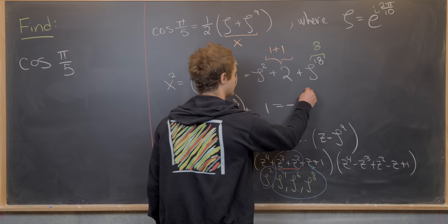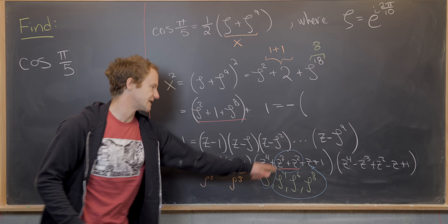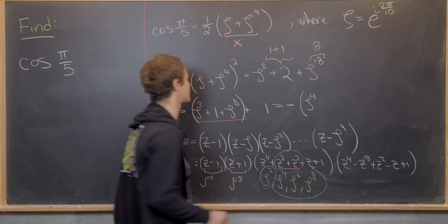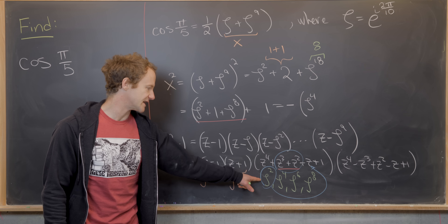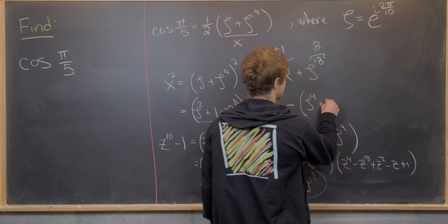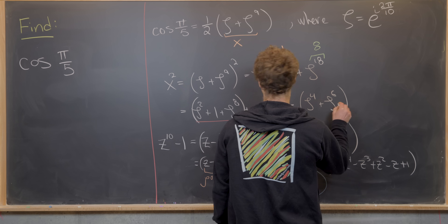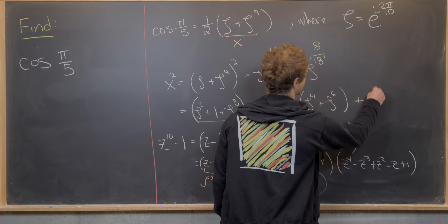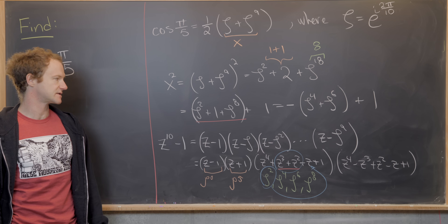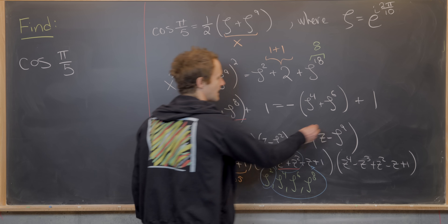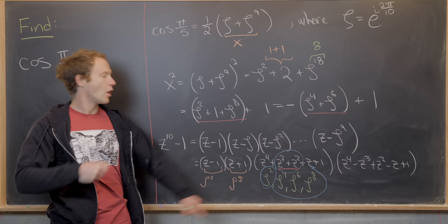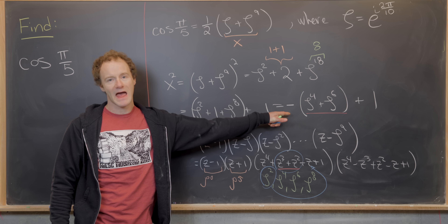So we get minus: (ζ²)² = ζ⁴, and (ζ²)³ = ζ⁶, plus the 1 that was outside the parentheses. So x² = -ζ⁴ - ζ⁶ + 1, where ζ is our primitive 10th root of unity.